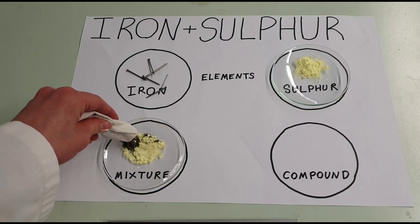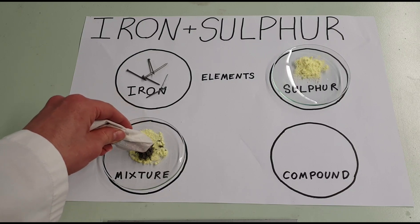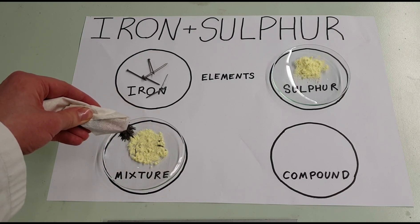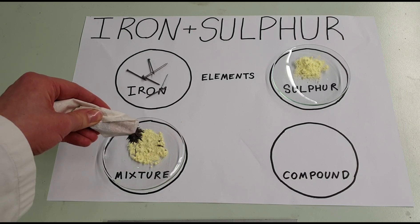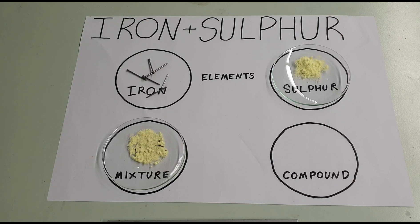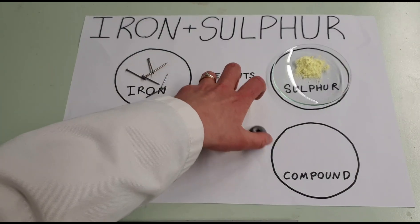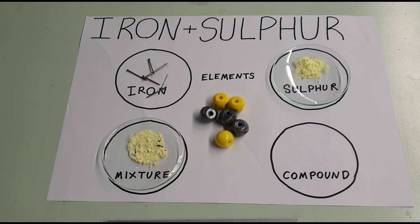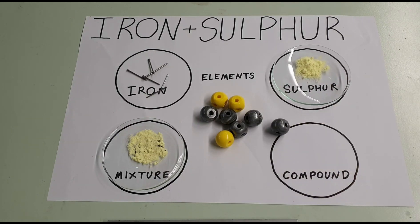As you can see, most of those iron filings have now been separated out of the iron and sulfur mixture. On a molecular level, what is happening is the iron and sulfur elements — the atoms that make the elements — are completely mixed. There is no chemical reaction between the two.